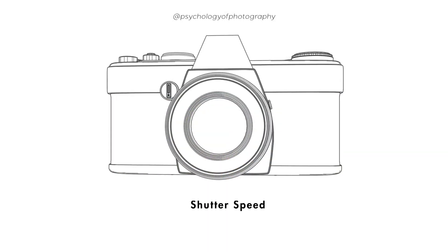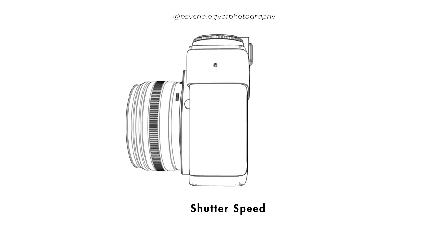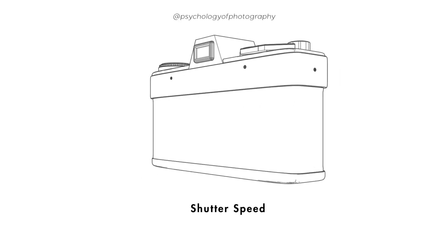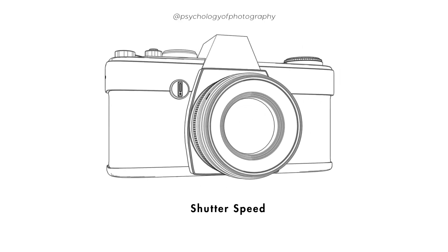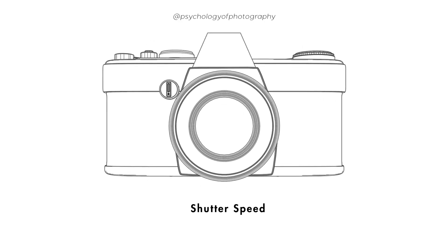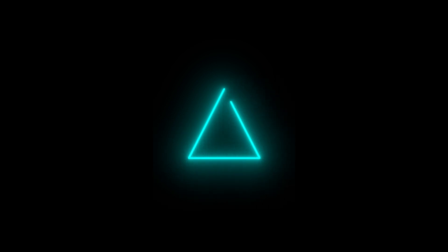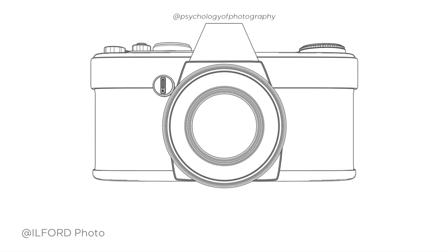In conclusion, shutter speed is an important element of the exposure triangle and it plays a critical role in determining the final image. We are on to our last corner of the exposure triangle: aperture.